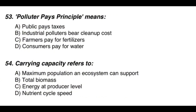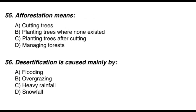Question 53: The polluter pays principle means — the correct option is B — industrial polluters bear cleanup costs. Question 54: Carrying capacity refers to — the correct option is A — the maximum population an ecosystem can support. Question 55: Afforestation means — the correct option is B — planting trees where they were non-existent.